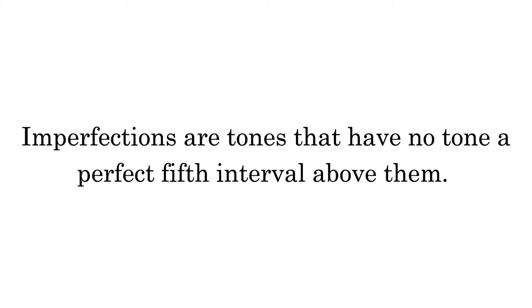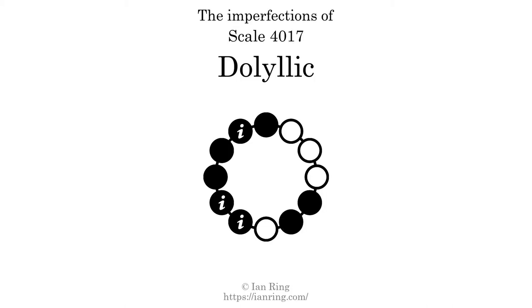Imperfections are tones that have no tone a perfect 5th interval above them. This scale has 3 imperfections, at positions indicated in the diagram.